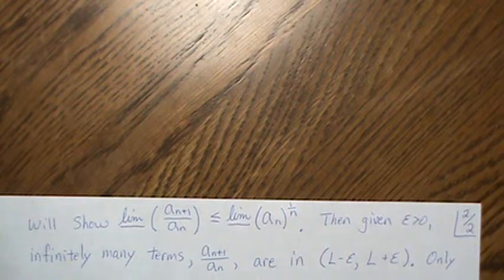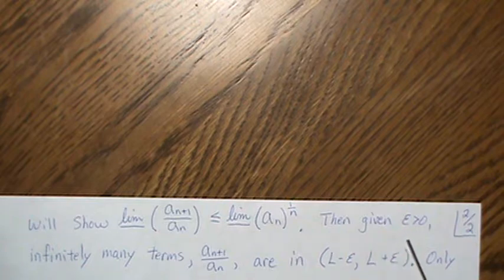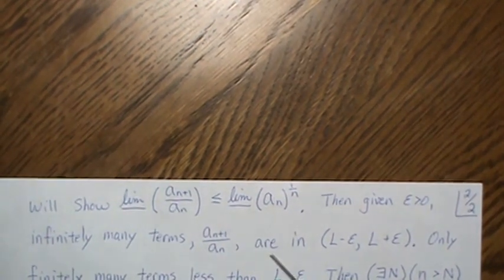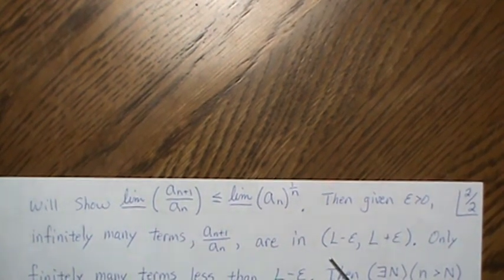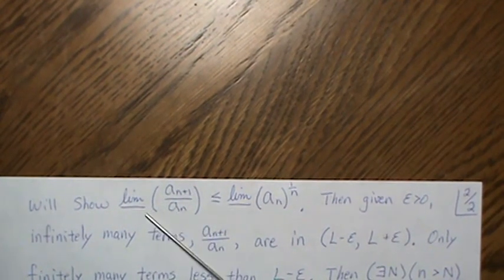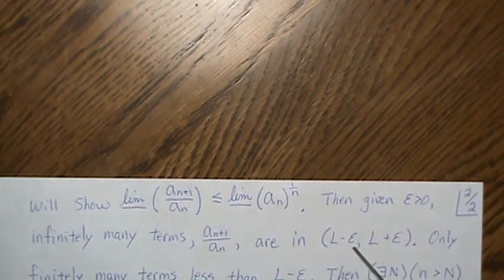So the root test, in both directions, is governed by what the ratio test indicates. For the divergence half: given epsilon greater than zero, there are infinitely many terms of the ratio in the interval (L − ε, L + ε), because L is now the limit infimum of the ratio — note this is a different L from the first page.